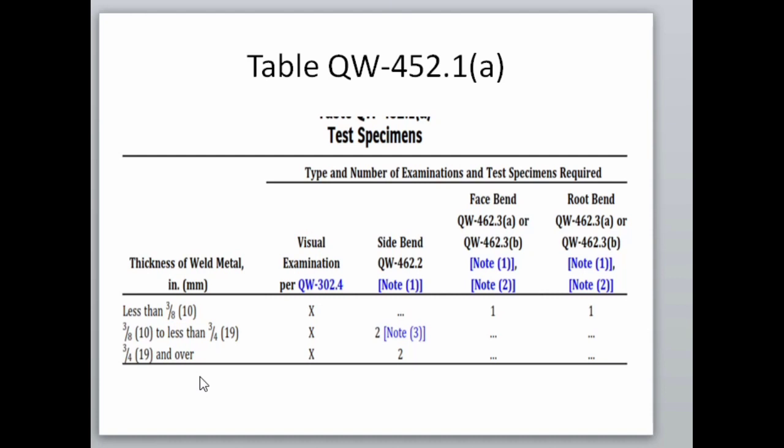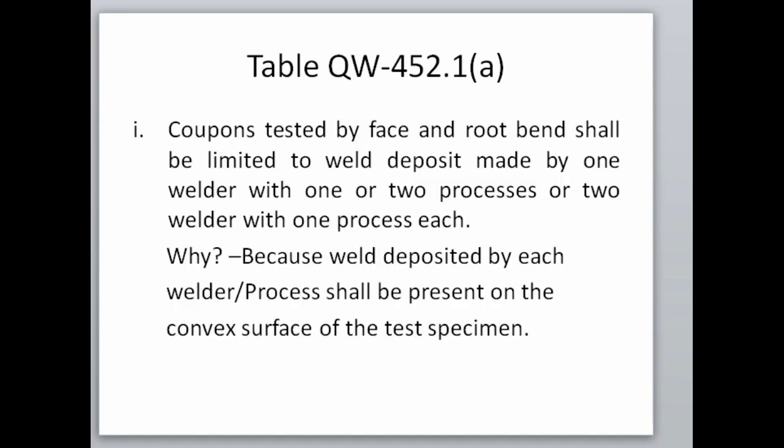If the thickness of weld metal is 19 mm and over, then we can only use side bends for qualification, because there is no inner space between the former and the die to perform face and root bend. One limitation of root bend testing is that it is only applicable to welds made by one welder with one or two processes, or two welders with one process each. The reason is that the weld made by each welder or process shall be present in the convex surface of the test specimen.